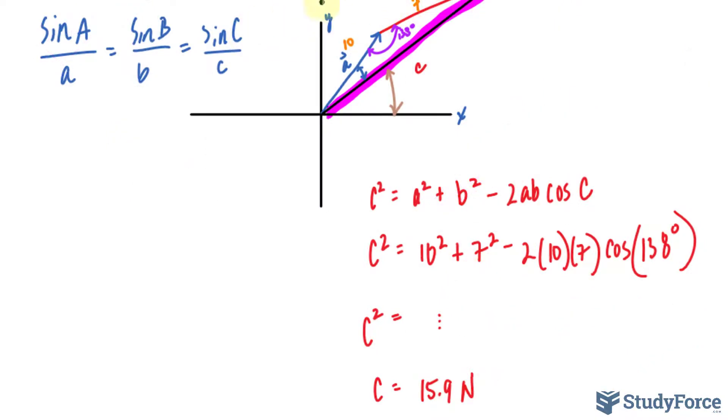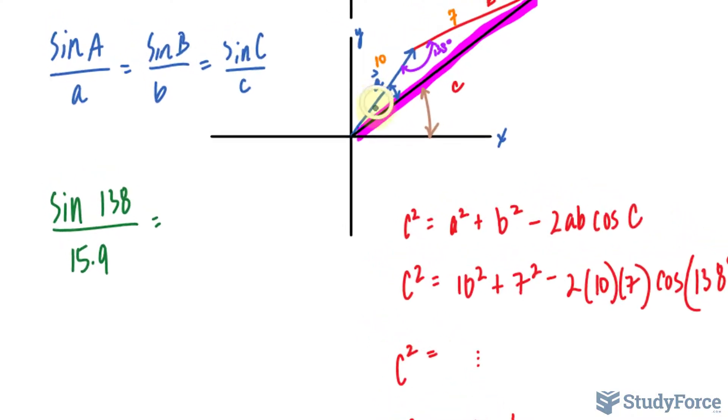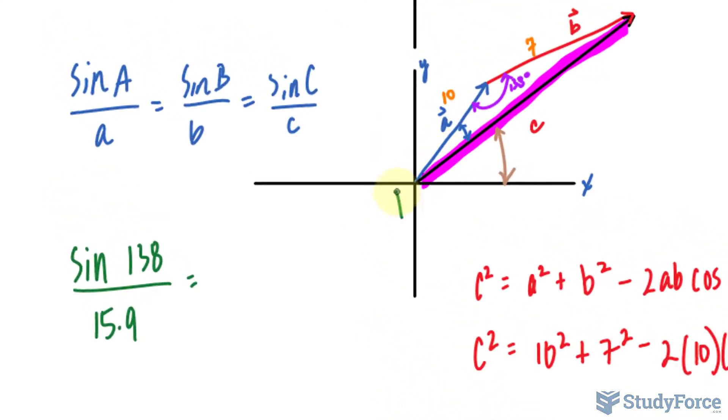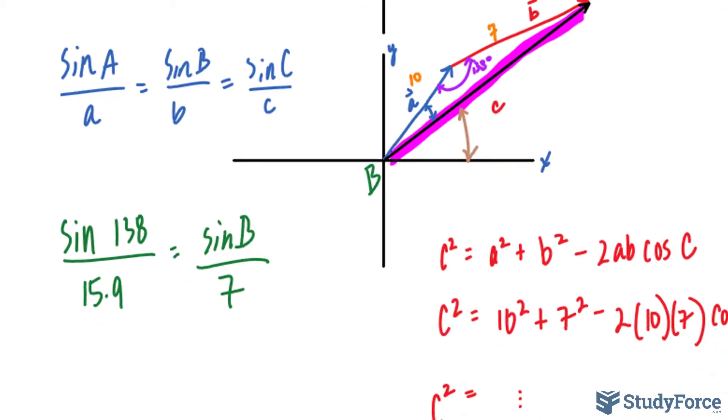To use the sine law, we will take sine C over C. That's a complete ratio there. Sine C, the angle was 138, over the length of C, which we found to be 15.9. And since we're looking for this angle, that angle right there is capital B, since opposite of it is little b. Sine B over the magnitude of B being 7. We will cross-multiply and then use sine inverse to find out the angle.